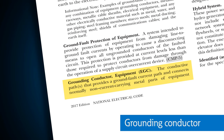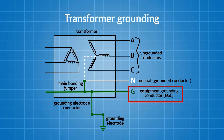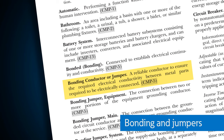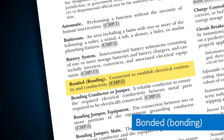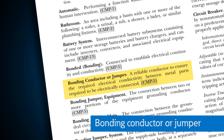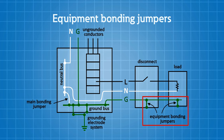Now the grounding conductor — that's a conductor used to connect the equipment or the grounded circuit of a wiring system to a grounding electrode or to the grounding electrode system. Now bonding and jumpers: bonding is defined by the NEC as connected to establish electrical continuity and conductivity. This is a very important term as we work throughout the power distribution system. Bonding conductors, or jumpers, are reliable conductors that ensure the required electrical conductivity between metal parts required to be electrically connected together.